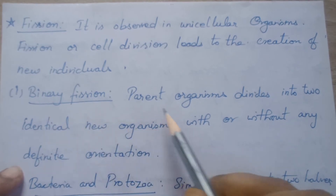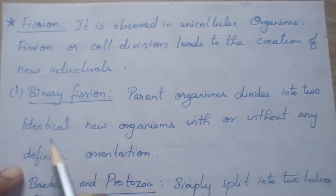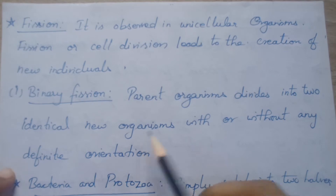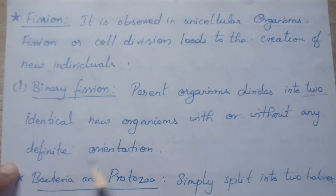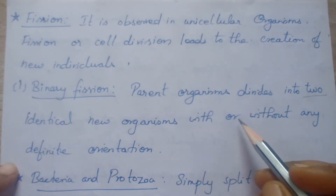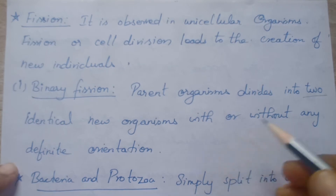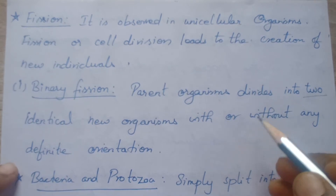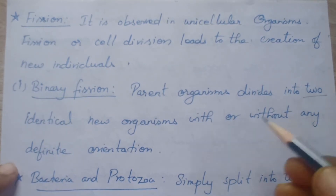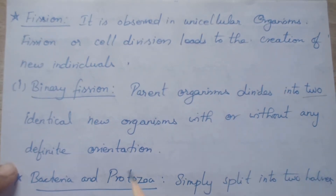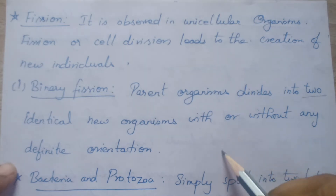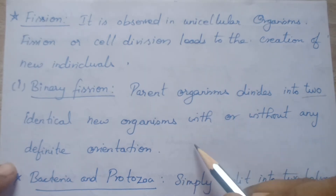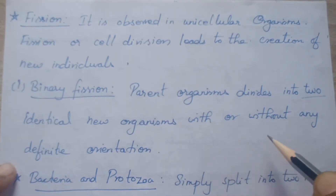What is binary fission? The parent organism divides into two identical new organisms with or without any definite orientation. It may divide without any pattern, or it divides into two equal halves. In some organisms, it can split only in the vertical pattern; in some organisms, in the horizontal pattern.